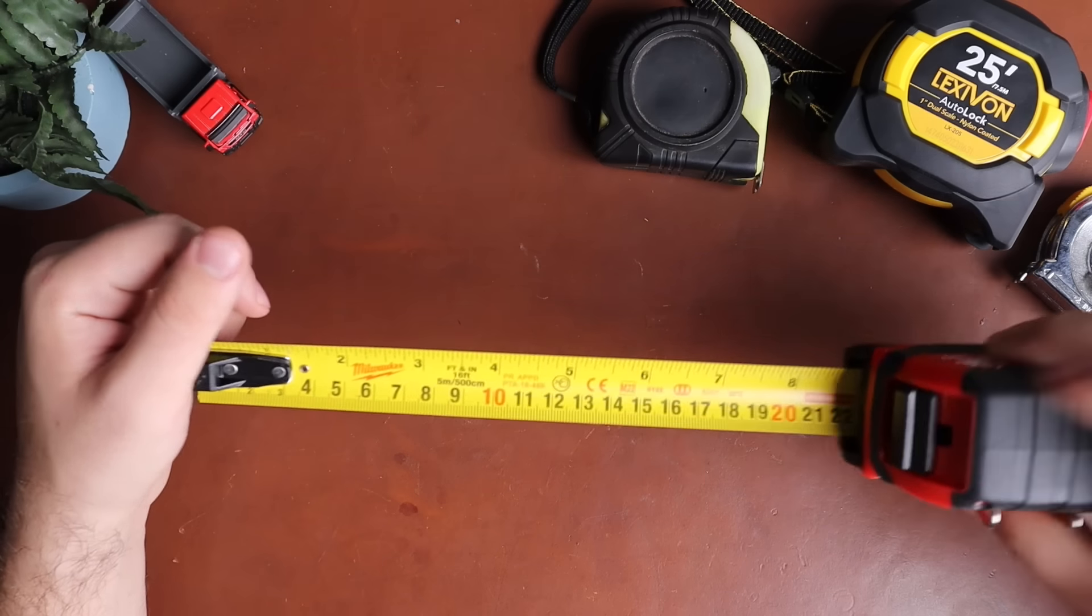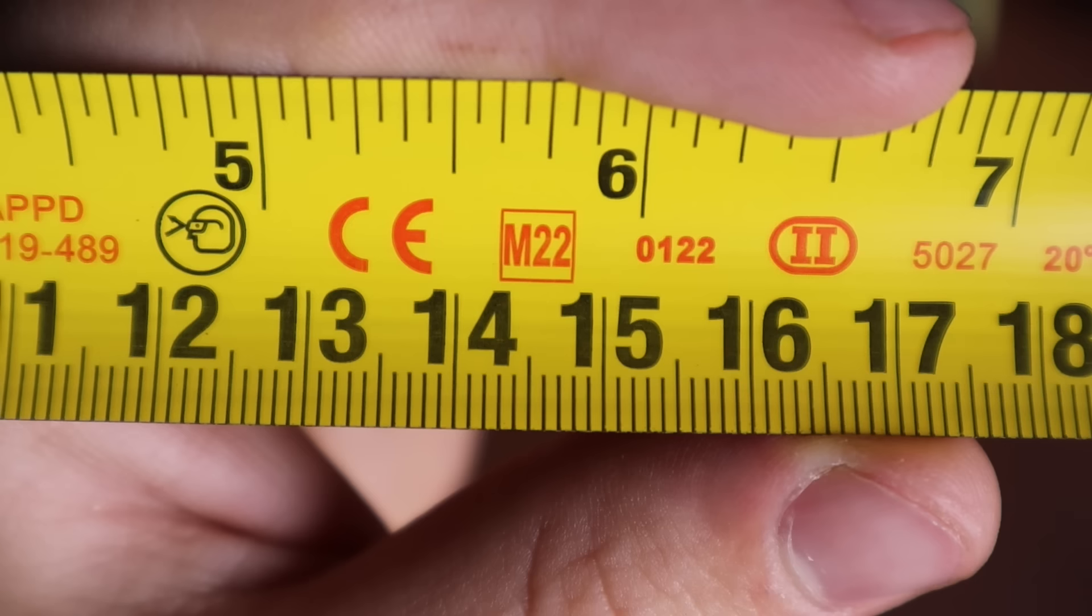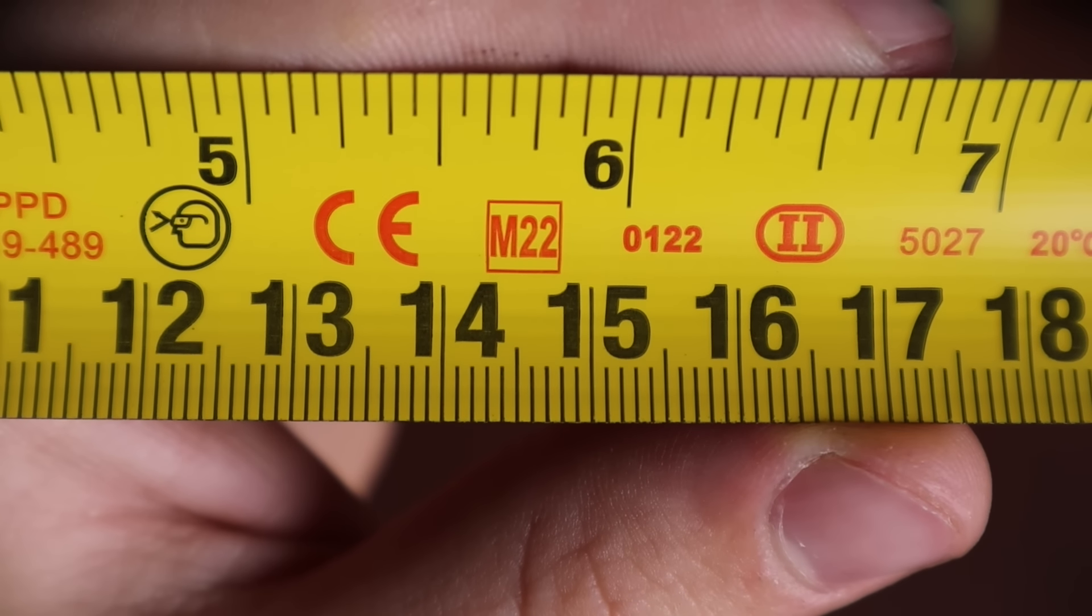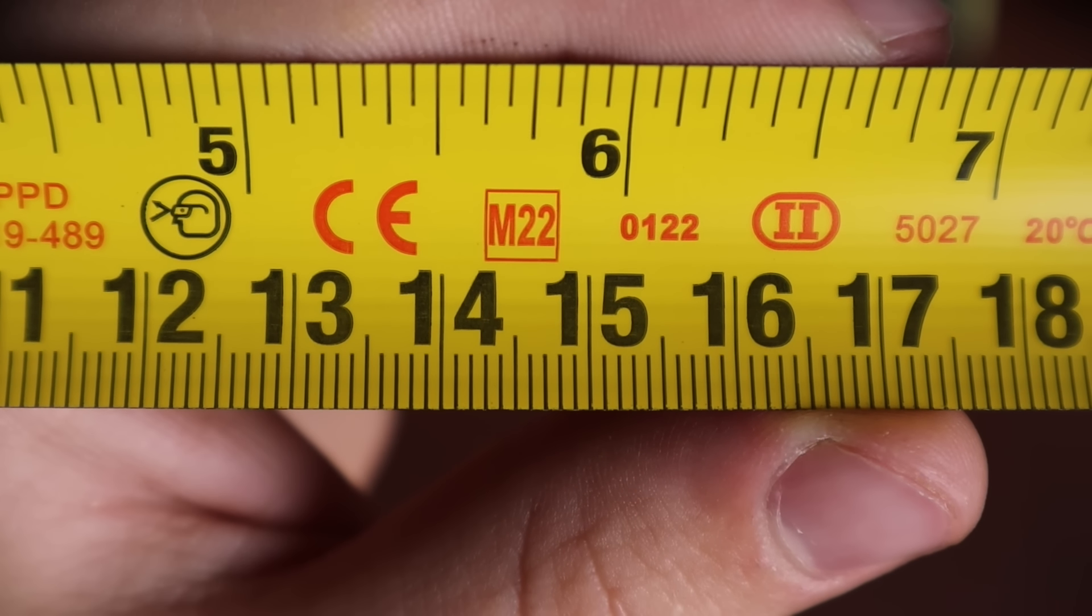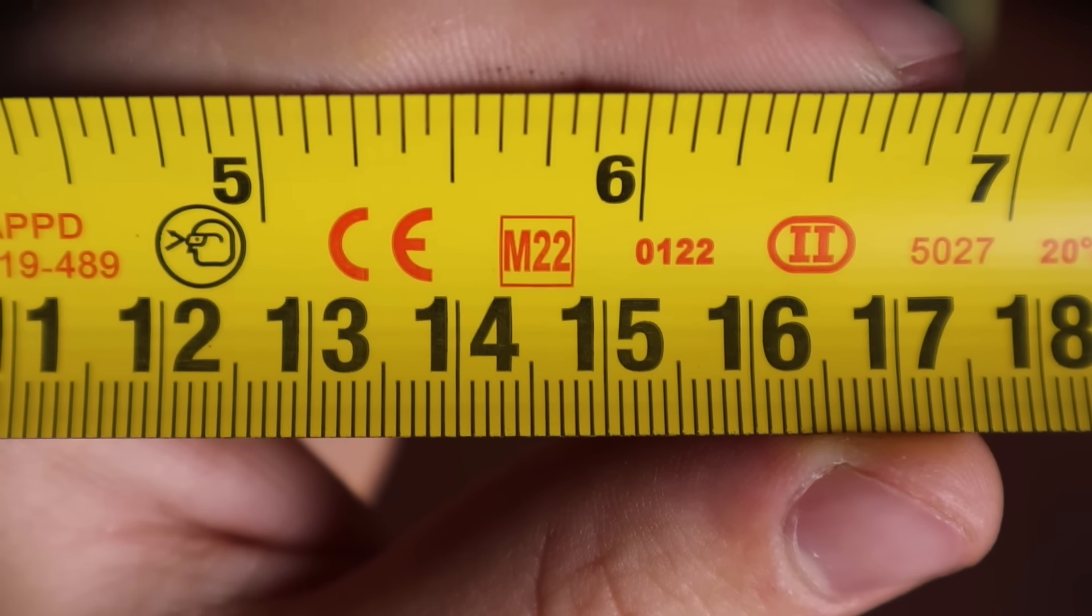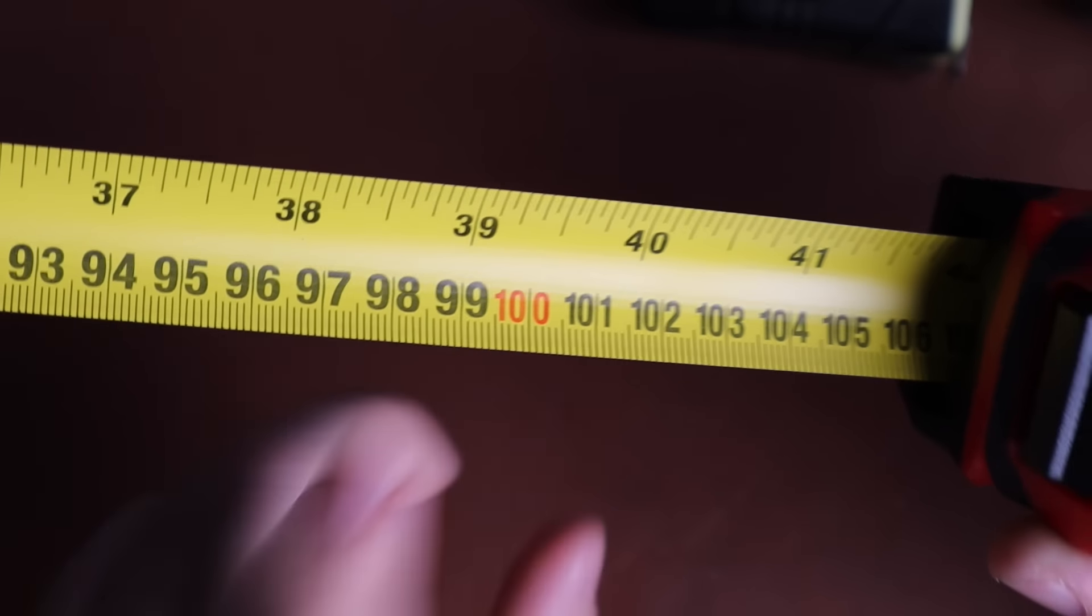Outside of the USA, you'll also have centimeter marks. This is a much simpler system of just centimeters. Each centimeter made up of 10 millimeters and one meter made up of 100 centimeters. Though meters are not usually marked.